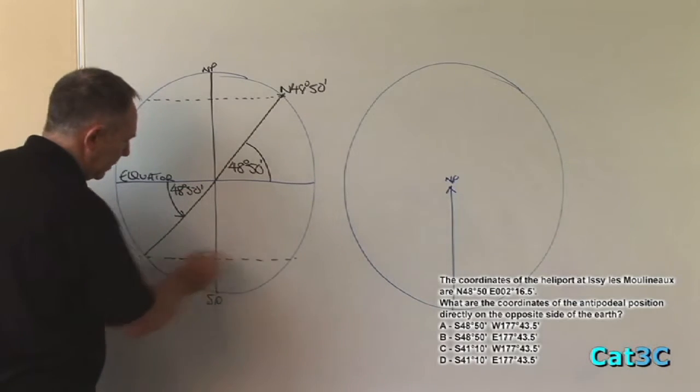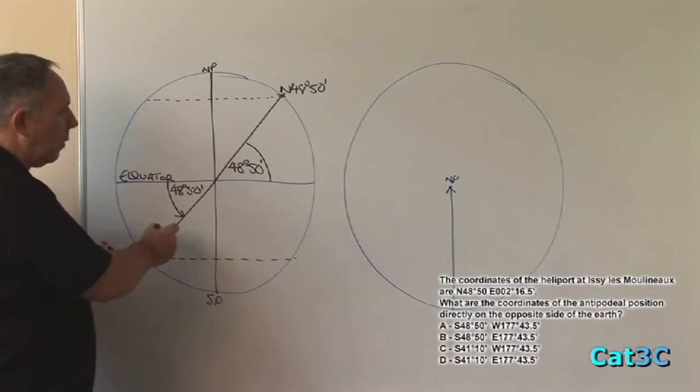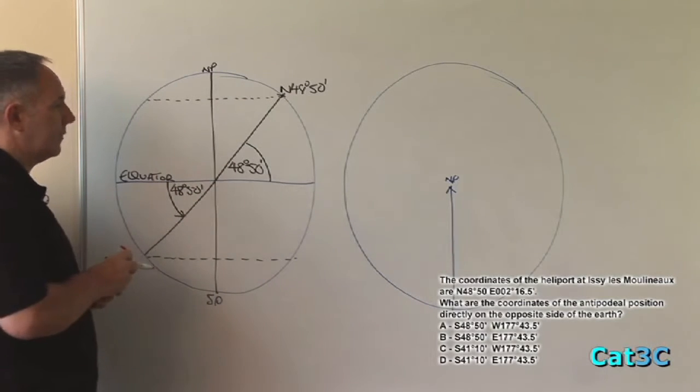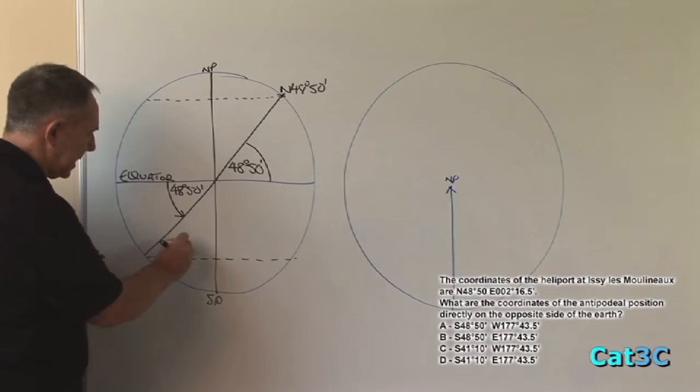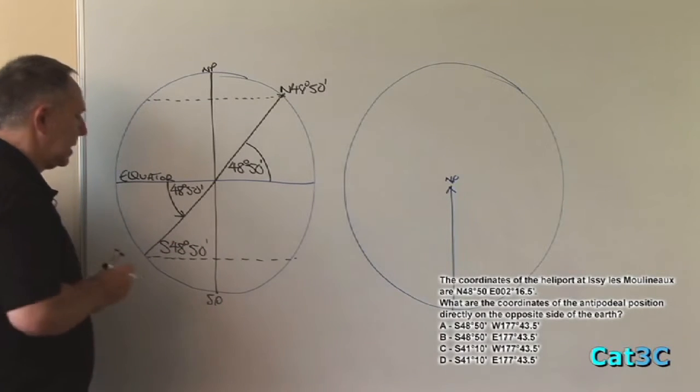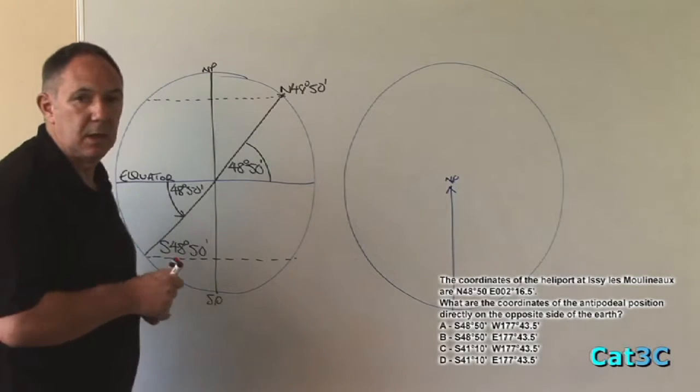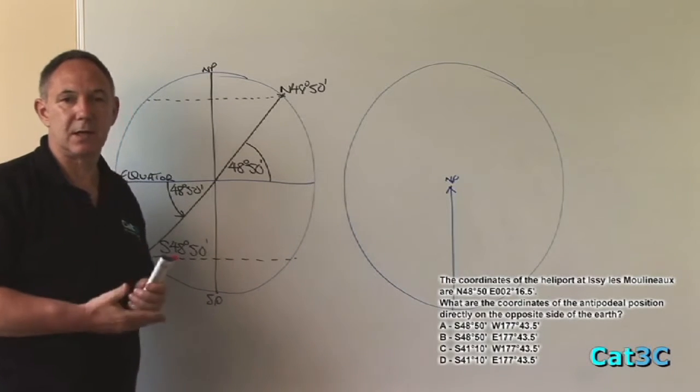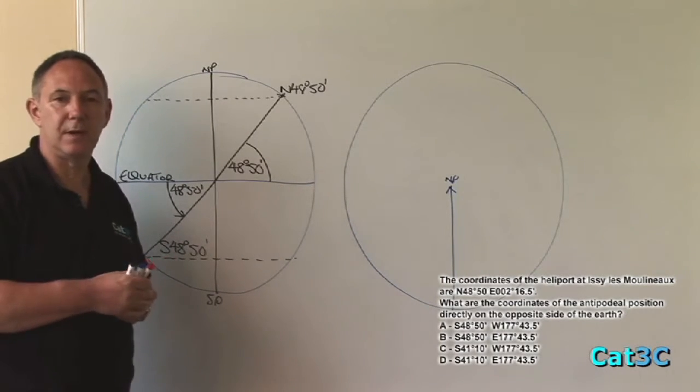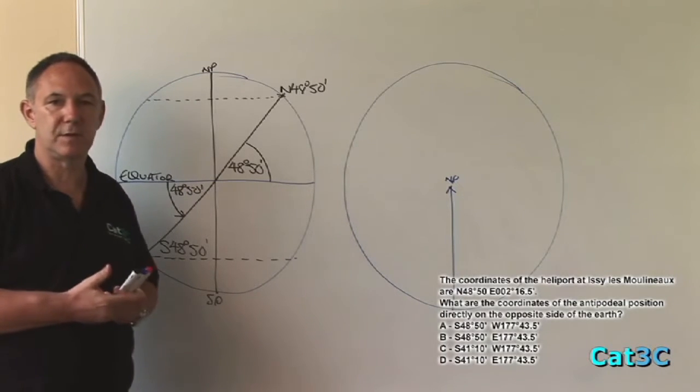Meaning, the latitude opposite 48 degrees 50 minutes will simply be exactly the same numerical value, 48 degrees 50 minutes, but in the southern hemisphere. Looking at the optional answers, we can see that there are only two that fulfil that requirement, and they are both reading south 48 degrees 50 minutes.